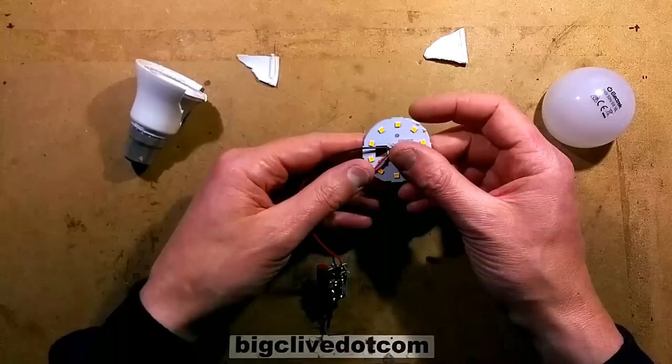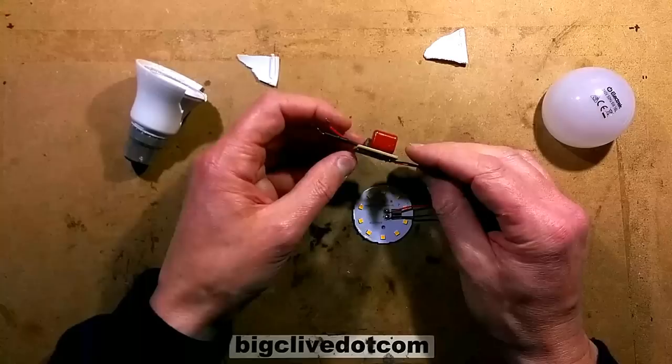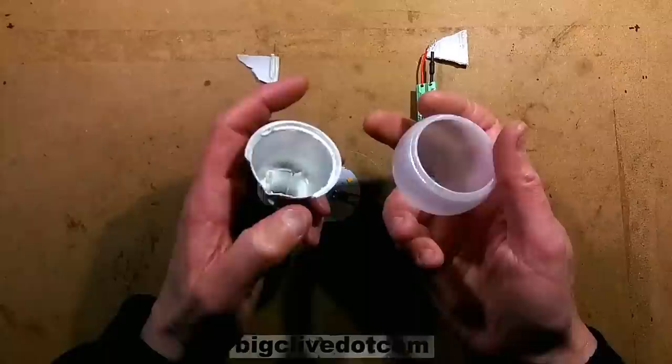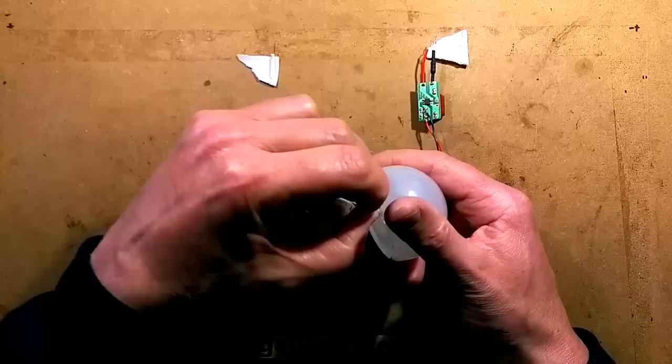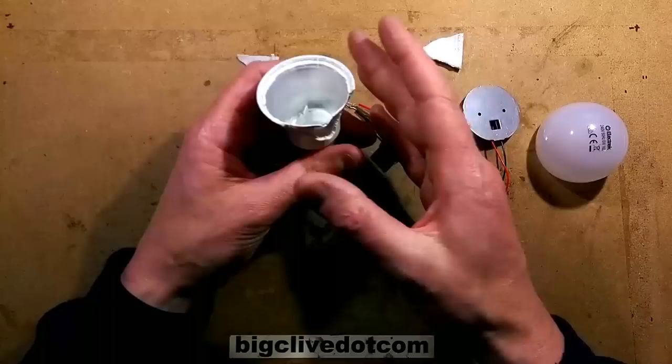So as predicted that was quite hard to get apart. I have smashed it apart. I've also extended these wires so we could do some little electrical tests. The power supply is a capacitive dropper, I wasn't expecting that. The LED panel itself is a usual aluminium-backed panel with the thin shim of the fibreglass on this side and then the copper tracks.